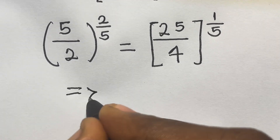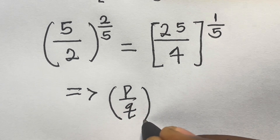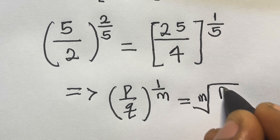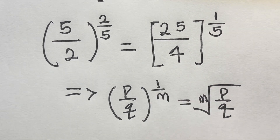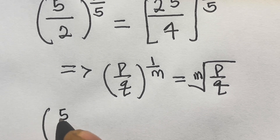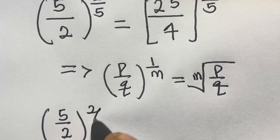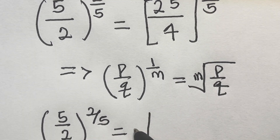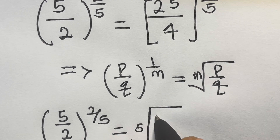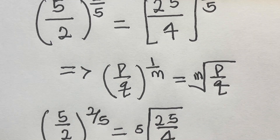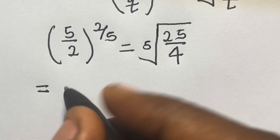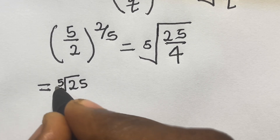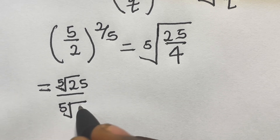Let's recall that if we have p divided by q raised to the power 1 divided by m, this will be equal to the m-th root of p divided by q. Applying this to the above, we have 5 divided by 2 raised to the power 2 divided by 5 equals the 5th root of 25 divided by the 5th root of 4.